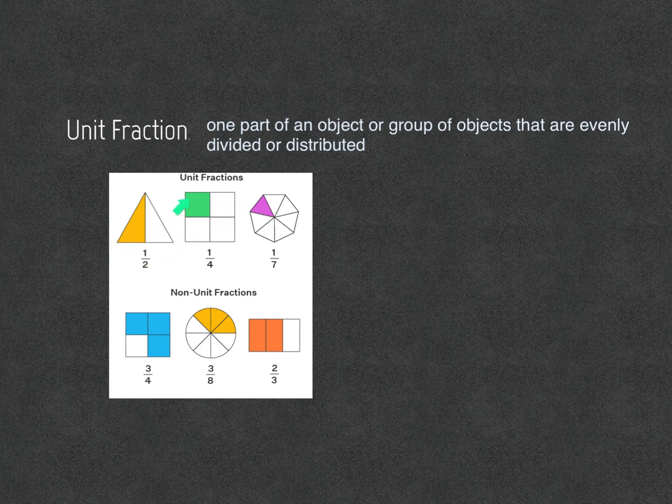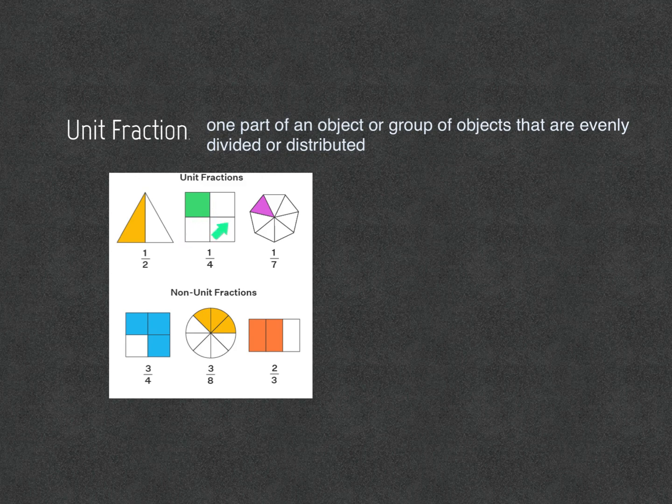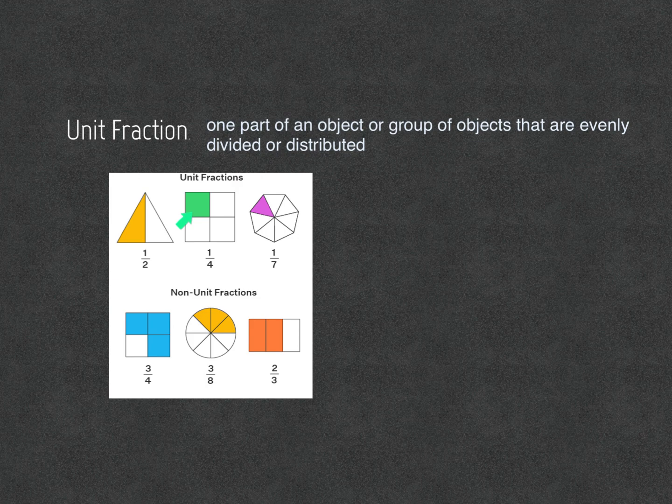For this square, one square is shaded in out of one, two, three, four squares. So one out of four.